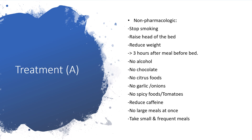No alcohol. No chocolate. No citrus foods. No garlic or onions. No spicy foods or tomatoes. Reduce your caffeine, and no large meals at once. Your doctor will give you appropriate guidance, and not all of these restrictions will necessarily apply in every case — but avoid the excess that would aggravate the situation. Instead of large meals, take small and frequent meals.